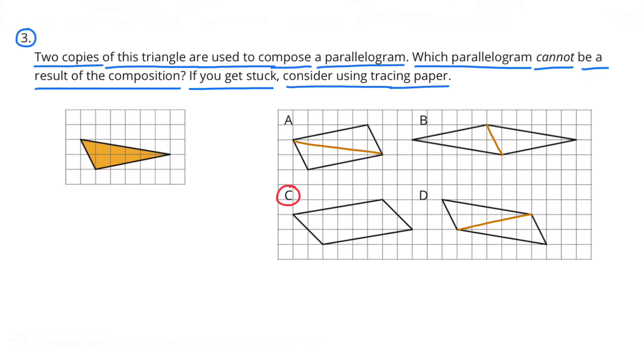I used a line to separate the copies of the two triangles in figures A, B, and D. Figure C didn't work. It's composed of two triangles that are a different shape than the triangle on the left.